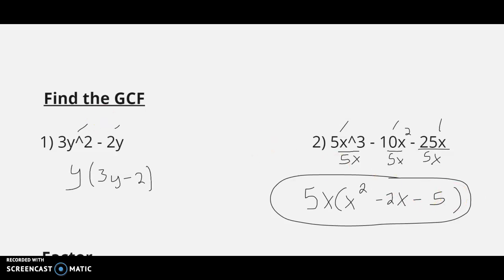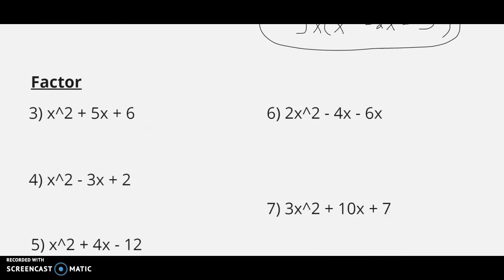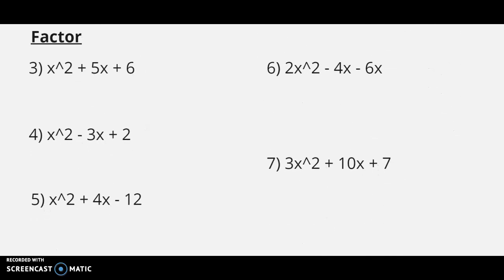Alright, next set of problems, we're just going to do some basic factorings of trinomials. So we have 5 examples here of some quadratic trinomials, and here's how they factor. First one, x squared plus 5x plus 6. We ask ourselves, what factors of 6 add up to 5? And the two numbers that multiply to 6, 2 times 3, if we add those same two numbers, 2 plus 3, we get 5.